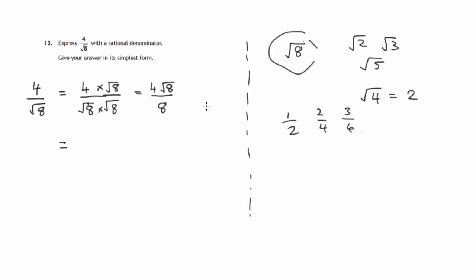Now, simplified form, even if we divide top and bottom by 4, we get root 8 over 2. And that's not simplified because square root of 8 can be simplified.